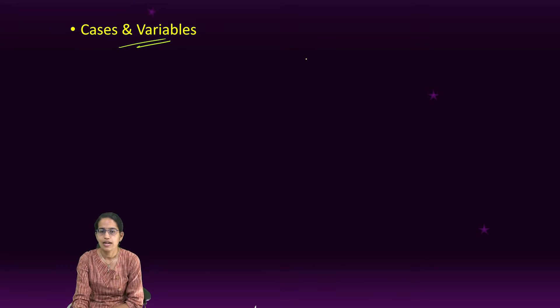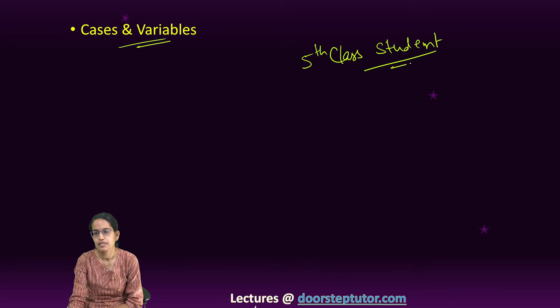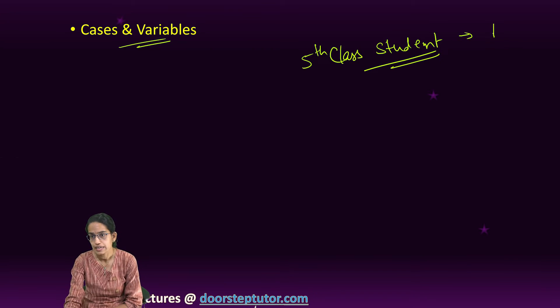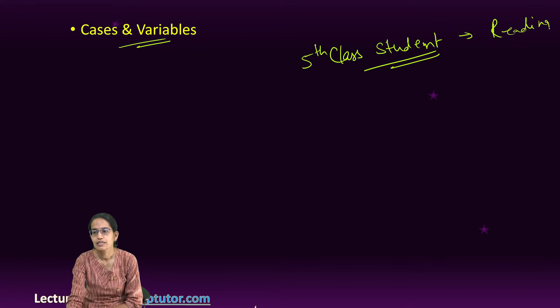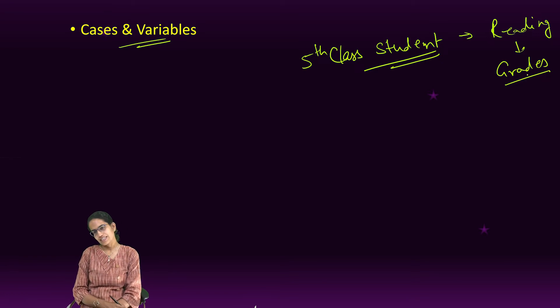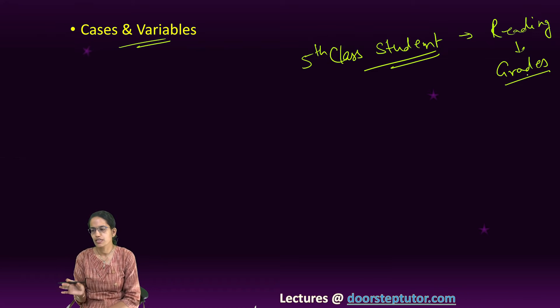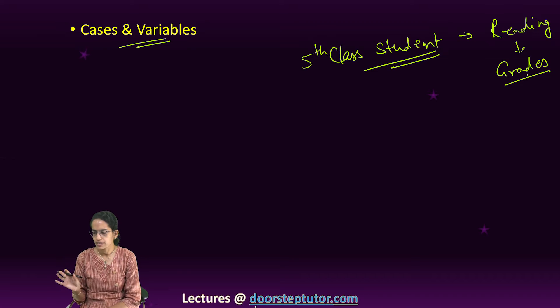Let's say my first example to understand cases and variables: I want to understand how a fifth class student or fifth grade student must spend time on reading and the resultant grades. Now what is constant and what is variable? The constant is any student that I take has to be from fifth grade or fifth class.